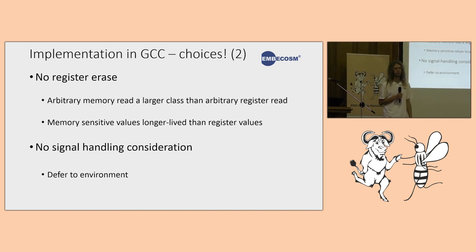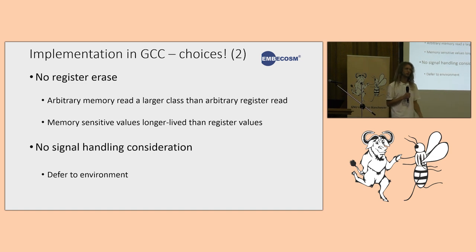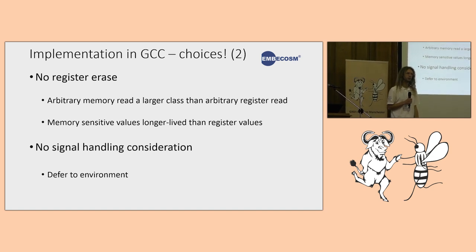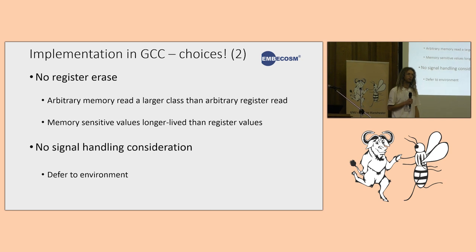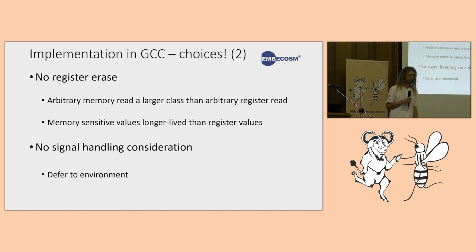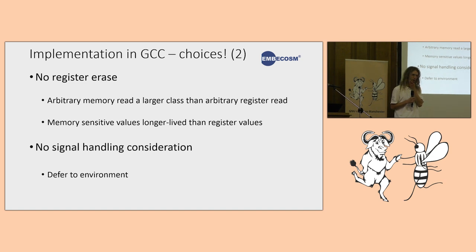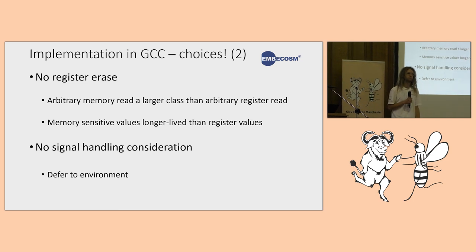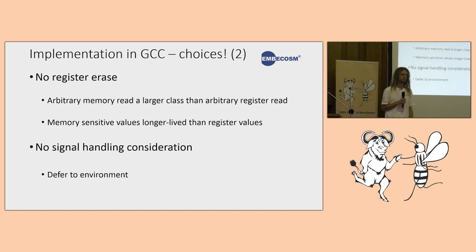An audience member noted that for 32-bit 386, GCC already has a problem where for some flag combinations correct epilogues and prologues can't be generated because there are no registers left. This is an existing architectural limitation, but can be worked around by not using certain advanced features like register arguments or unusual calling conventions.